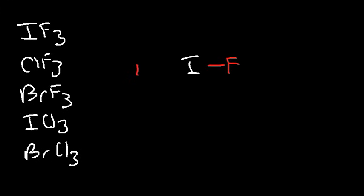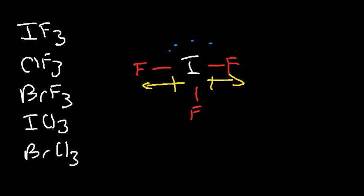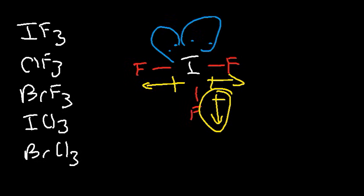Iodine trifluoride has a T-shaped molecular geometry. In this structure, some dipole moments cancel each other, but one bond has no opposing bond to cancel it. Plus, the presence of two lone pairs on top makes these types of molecules polar. If you have the T-shaped molecular geometry, for the most part it is going to be polar.